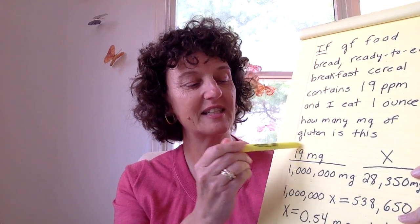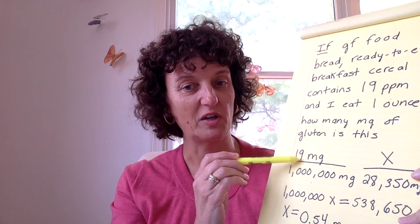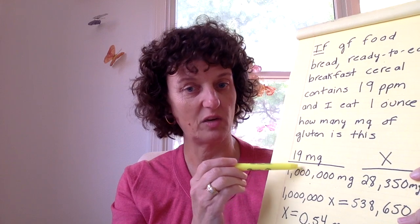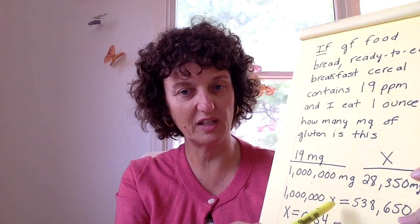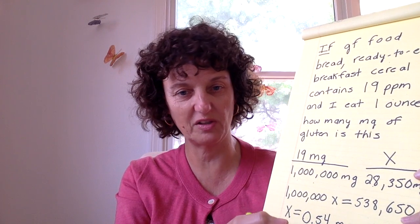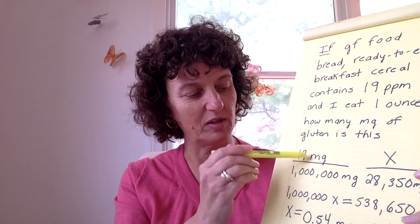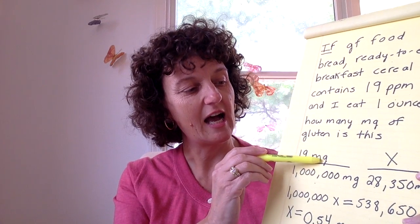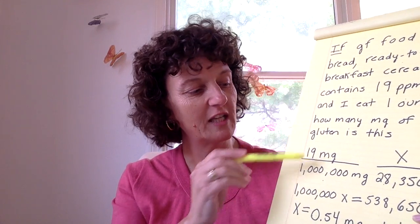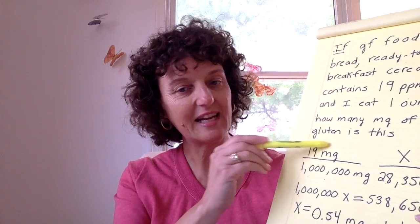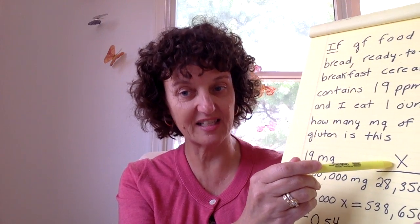You can substitute when you see a result on Gluten-Free Watchdog, whether it's 10 parts per million, less than 5 parts per million, 20 parts per million, or 22 parts per million — you can set up this same ratio and solve for X.